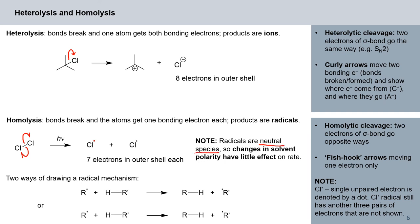So radicals are neutral species, hence you will not see a massive effect of solvent polarity on the rate of such a reaction. We have two ways of drawing such a radical mechanism.